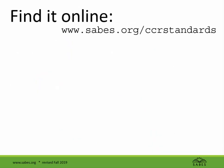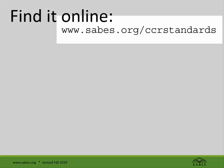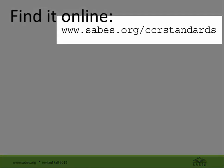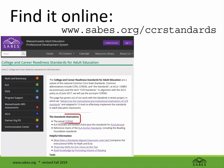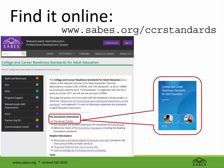Take a moment now, if you haven't already, to get out your copy of the CCRSAE or to pull it up online. To find it online, go to www.sabes.org/CCRStandards and click on the link for the actual CCRSAE.